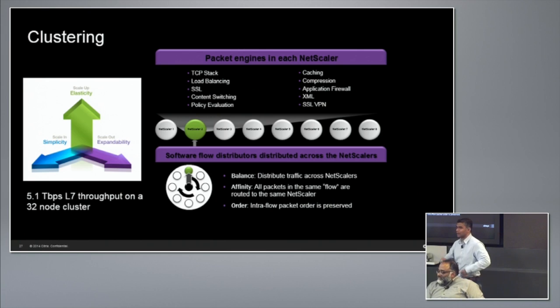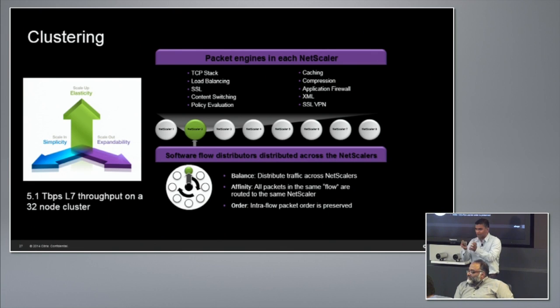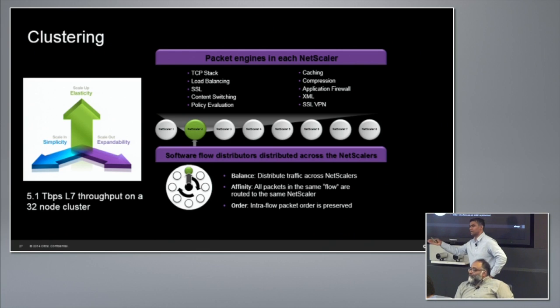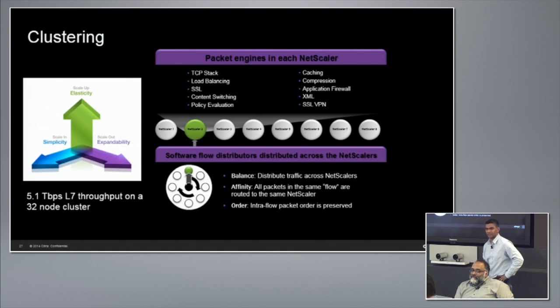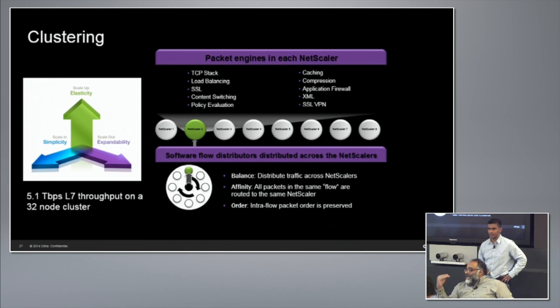Because of that one fundamental decision — share nothing, minimize coordination — it doesn't matter whether the packet engine is running on one box or across multiple boxes. It's the same technology; the only thing we had to change was the underlying communication subsystem from shared memory to work over Ethernet. The architecture lends itself nicely for clustering — scaling up to 32 nodes and 5 terabits per second. Nothing in here is tied to specific hardware, so you can run the same technology in other form factors and get similar linear scale.